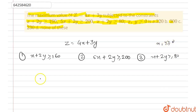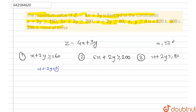First of all, we have to draw the equation of a line to plot the region occupied by x plus 2y ≥ 160. We draw the line x plus 2y = 160. Its coordinates are: when x equals 0, then y equals 80, and when y equals 0, then x equals 160.